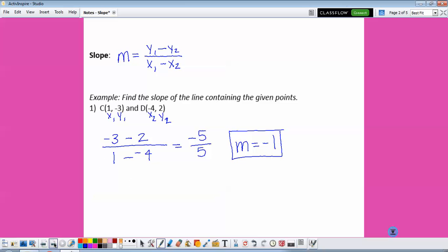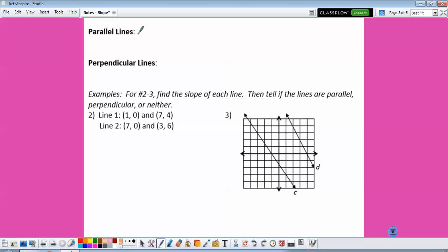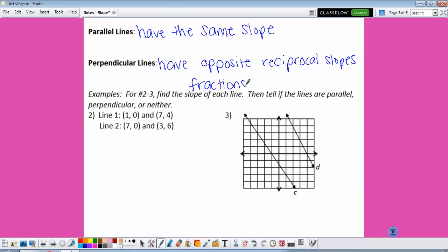So let's use this formula to help us compare lines. Parallel lines have the same slope and perpendicular lines have opposite reciprocal slopes. And this means that the fractions are flipped and we switch signs.